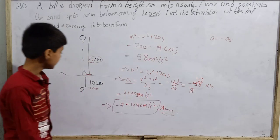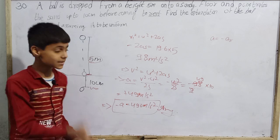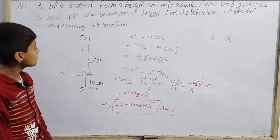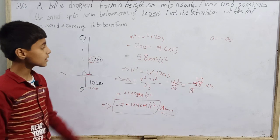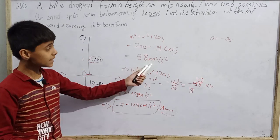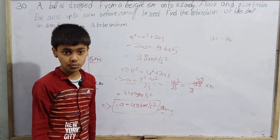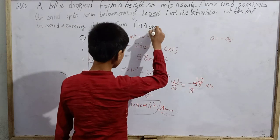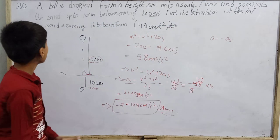Since it has a very high value — 490 m/s² — it means in just one second, the velocity decreases by 490 m/s. The velocity upon reaching the sand is √98, which is about 7√2 m/s. So in a very short time the velocity becomes zero, which makes sense since the ball stops in only 10 cm. Our answer is 490 meter per second square.